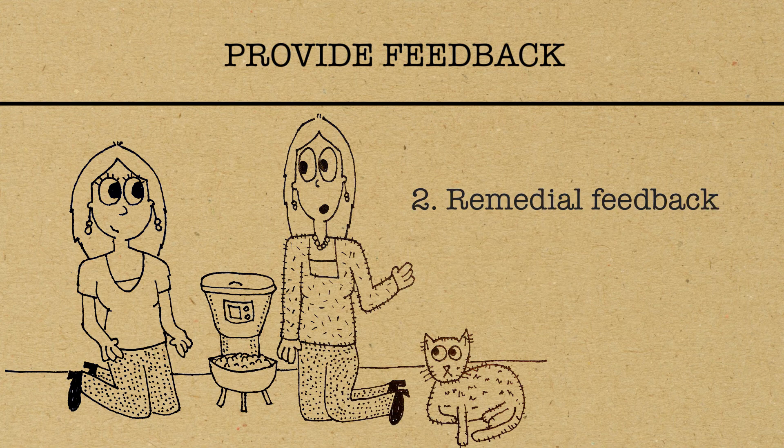Then there's remedial feedback. This directs learners in the right direction to find the correct answer without giving it away. In our example, this could be referring your daughter to the instruction manual for the feeder.